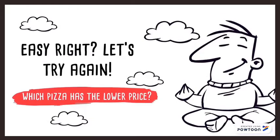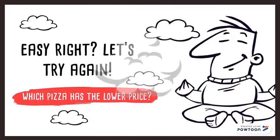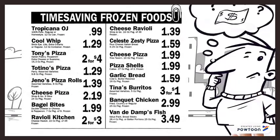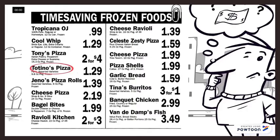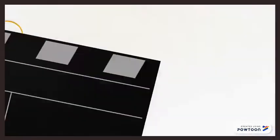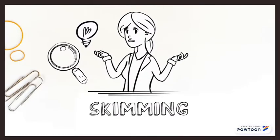Let's try again. The next question: which pizza has the lower price? The keyword here is 'lower price.' The answer is Totino's pizza, and the price is $1.29. That is even easier, right?